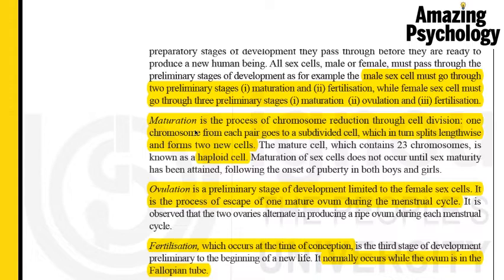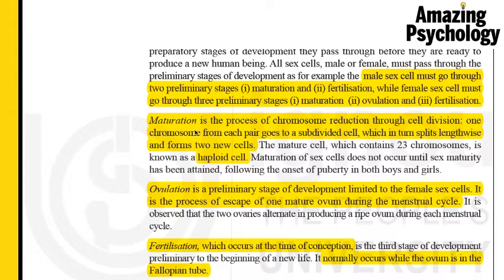Maturation is the process of chromosome reduction through cell division. One chromosome from one pair goes to a subdivided cell, which in turn splits lengthwise and forms two new cells. The newly formed cell is called a haploid cell. When the cell divides, the genetic material also divides. A male cell normally contains 23 pairs of chromosomes — a total of 46. When splitting takes place, each new cell will have only 23 chromosomes, exactly half the normal number. These are haploid cells, and all sex cells are haploid cells.